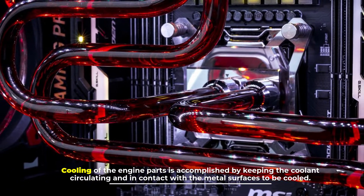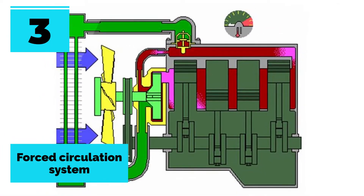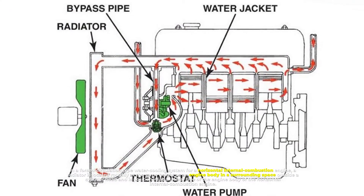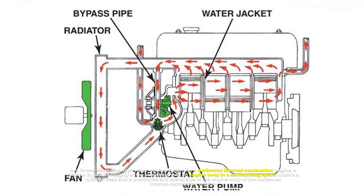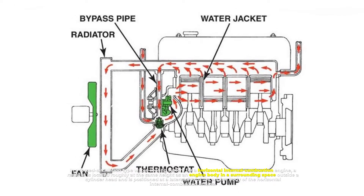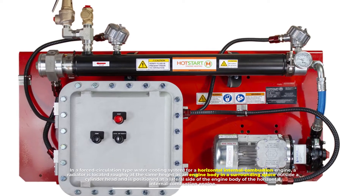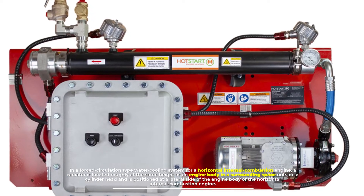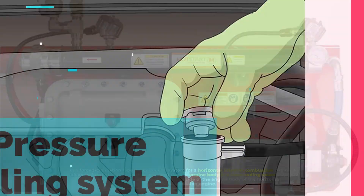Number three: force circulation system. In a force circulation type water cooling system for a horizontal internal combustion engine, a radiator is located roughly at the same height as the engine body in a surrounding space outside the cylinder head, and is positioned at a lateral side of the engine body.